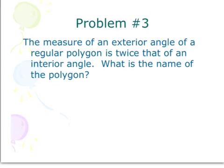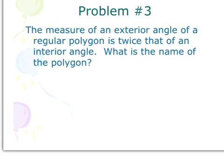Alright, for this problem, we're going to draw a diagram to help us see what's going on. You don't necessarily have to have one, but it is helpful. So it says, the measure of an exterior angle of a regular polygon is twice that of an interior angle. What is the name of the polygon?